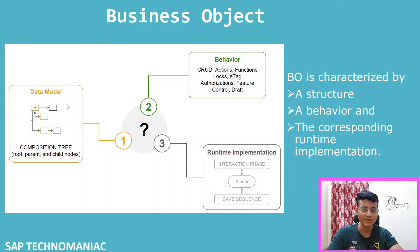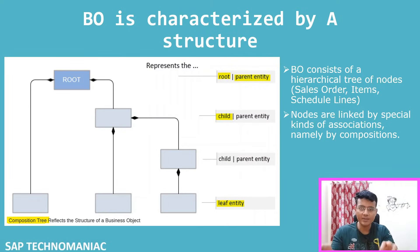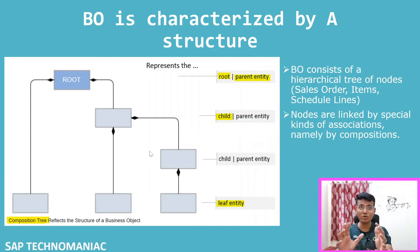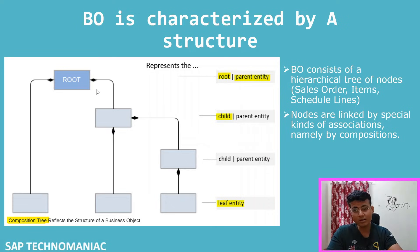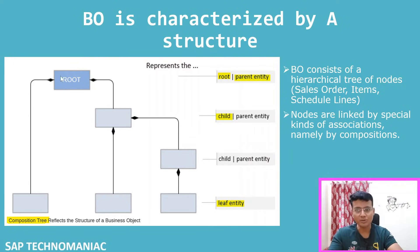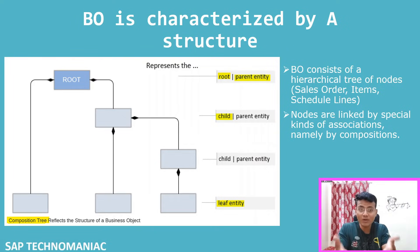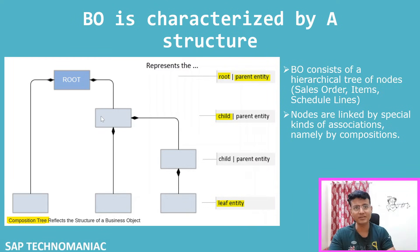Today we focus on the data model part, which is created by the composition tree. This is entirely called the composition tree - it reflects the structure of the business object and how it looks. It has a parent-child relationship, or a tree hierarchy. For example, the root could be the sales order, with a child node of sales order line item, and a further child of sales order schedule line item, forming one complete business object.